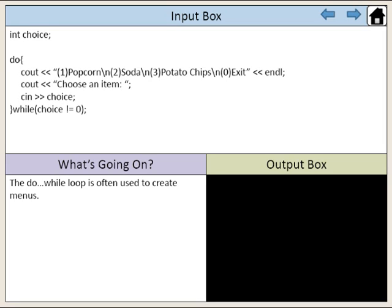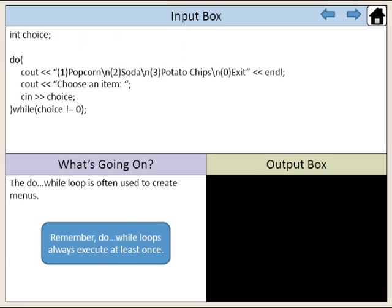The do-while loop is often used to create menus. Here we've declared the variable choice with an integer data type. Choice will be used for the user input. We've also created a do-while loop that will display a menu to the user. Remember, do-while loops always execute at least once.